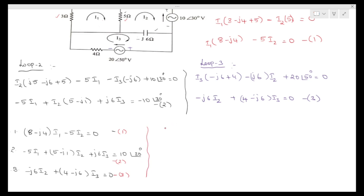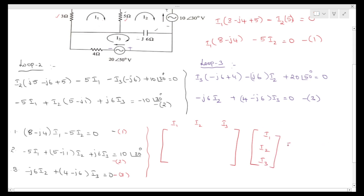Now, for the matrix formula, we arrange I1, I2, and I3 in a 3×3 order matrix. The impedance matrix multiplied by the current column vector [I1, I2, I3] equals the voltage vector. For row 1: (8 − j4) for I1, −5 for I2.